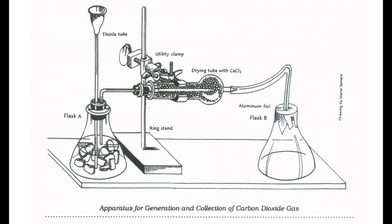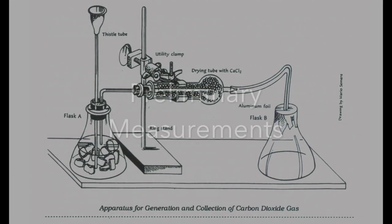You can see we have flask A where we have a thistle tube for adding acid into our calcium carbonate chips. Carbon dioxide will pass through the drying tube and be collected in flask B. Flask B is covered with foil, and we will see a little bit more about that later.